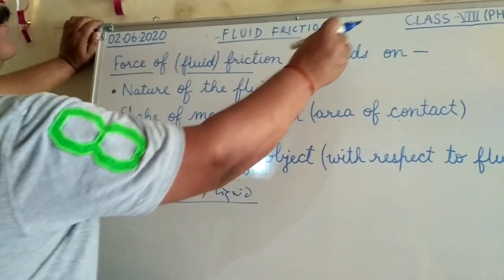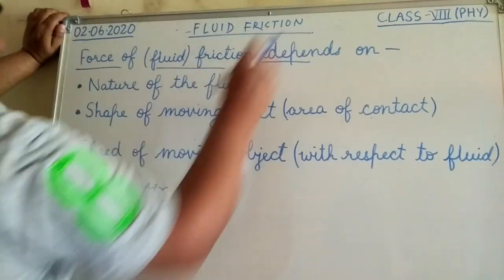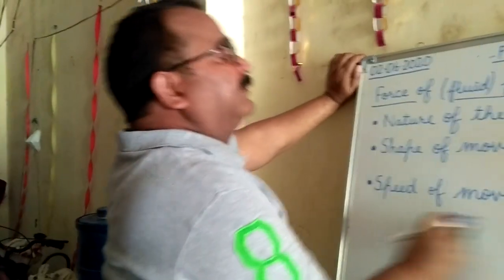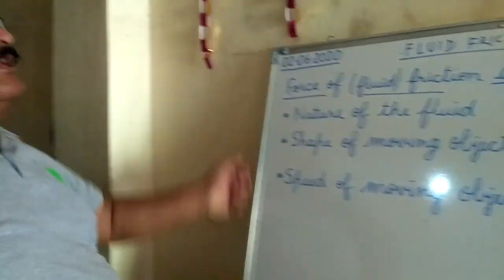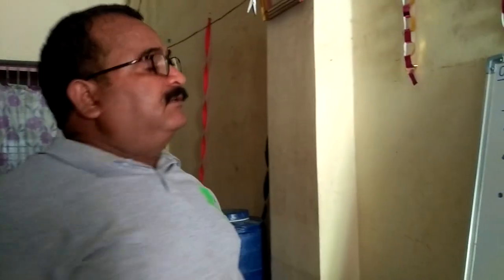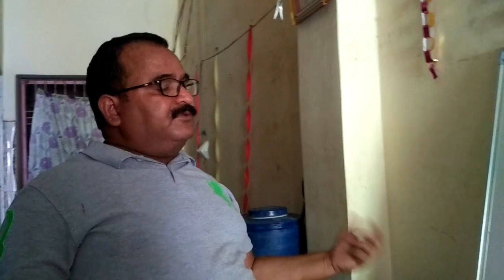Due to fluid friction, we see in nature the flying of airplanes, flying of boats, and moving of ships or boats into the sea — they all have their special shape.